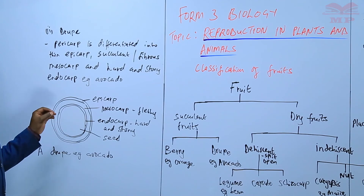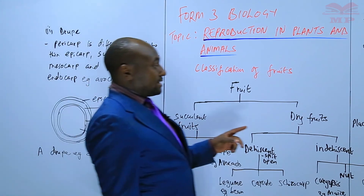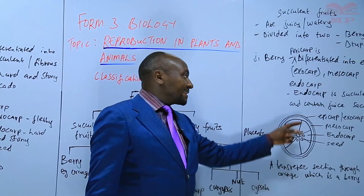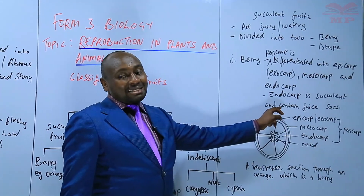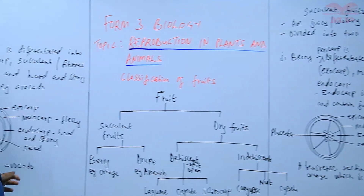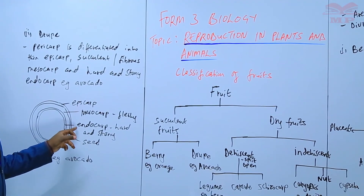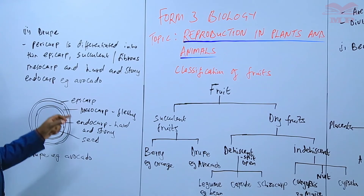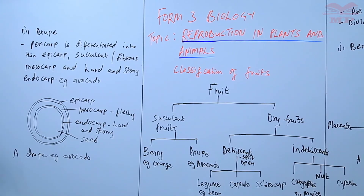What differentiates the drupe and the berry is that in a berry the endocarp is succulent and contains juice sacs, but in the case of a drupe the endocarp is hard and stony. However, in both cases the mesocarp is succulent.